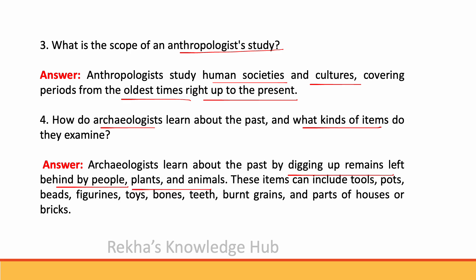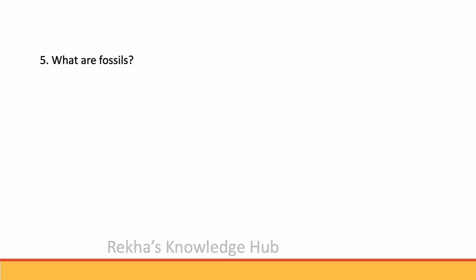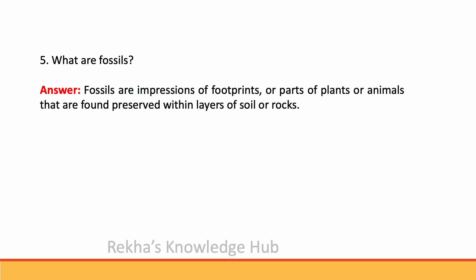The items archaeologists examine can include tools, pots, beads, figurines, toys, bones, teeth, burned grains and parts of houses or bricks. What are fossils? Fossils are impressions of footprints or parts of plants or animals that are found preserved within layers of soil or rocks.